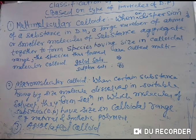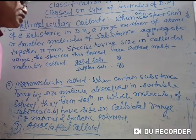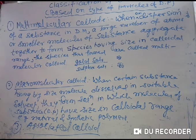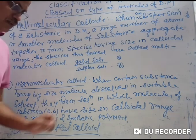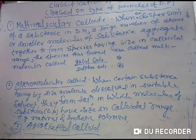In gold sol, the colloidal particles of gold are known as multi-molecular colloid. In sulfur sol, colloidal particles of sulfur are also known as multi-molecular colloid, and the solution is known as multi-molecular colloidal solution. Now let's come to the next type: macromolecular colloid.